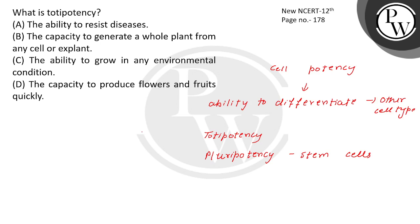Ectoderm gives rise to the nervous system, sensory organs, and epidermis. These are all examples. But when we talk about totipotency, what are you thinking about?